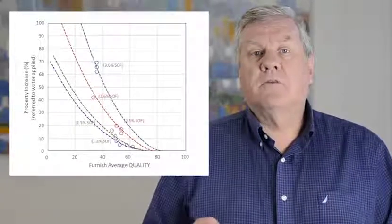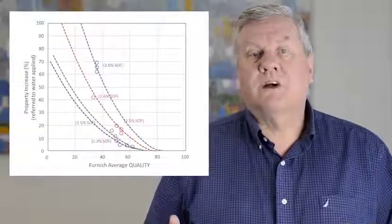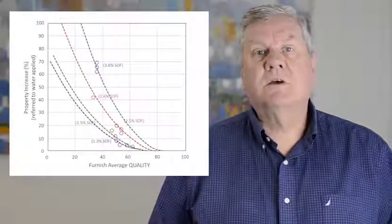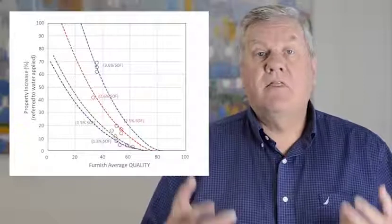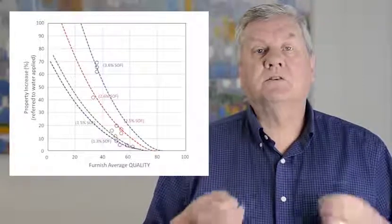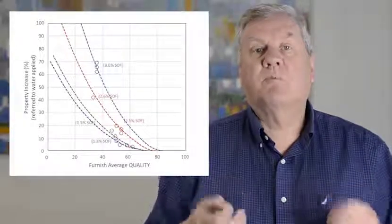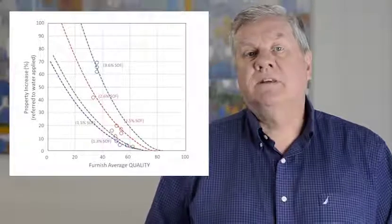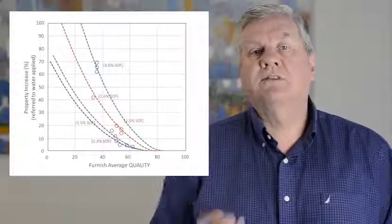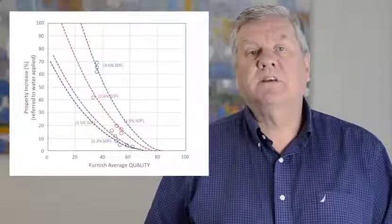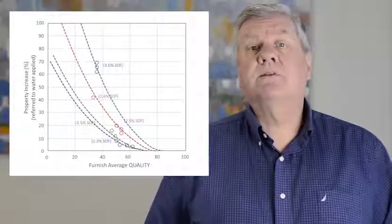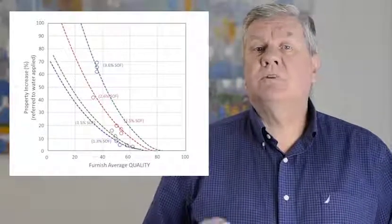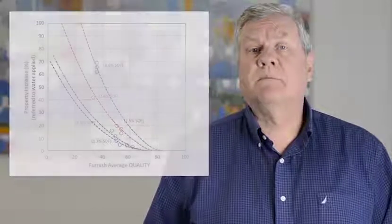If you're adding a lot of, for instance, broke or recycled or re-slushed broke back into your paper machine, that will affect how well your starch works, how much property you get on the paper machine. So it's something to keep in mind. If you're adding starch to your paper and expect to see increase, maybe one of the things you better do is manage how much broke comes back into that paper machine.